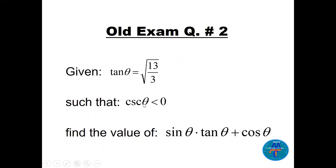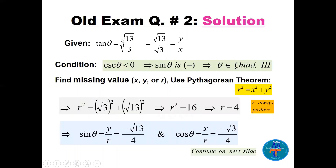A similar question: tan(θ) = √13/3 and csc(θ) is negative. We need to find sin(θ)·tan(θ) + cos(θ). Since tan(θ) is given, we break it into x and y components. We also need to find r.